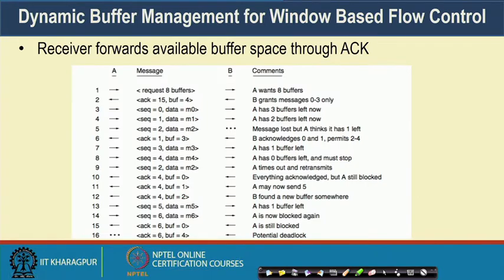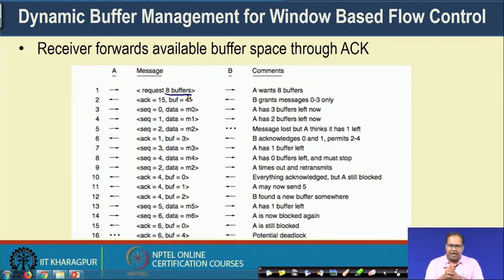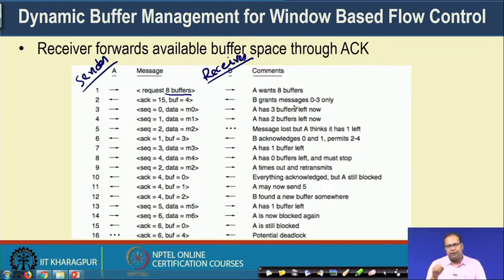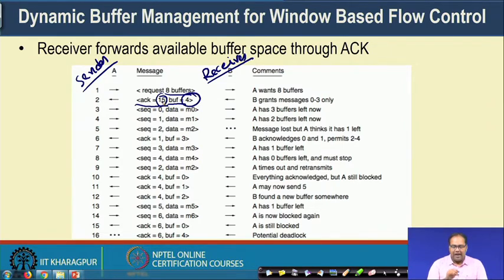Here is an example with two nodes A and B. A requests 8 buffers — where buffers represent the number of fixed-size segments to transfer — but B finds only 4 buffer spaces available. B sends back an acknowledgement with buffer space value 4, meaning A will only send segments 0 to 3. A sends message M0, then M1, then M2 which gets lost.